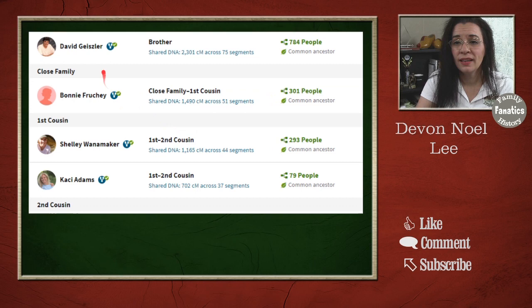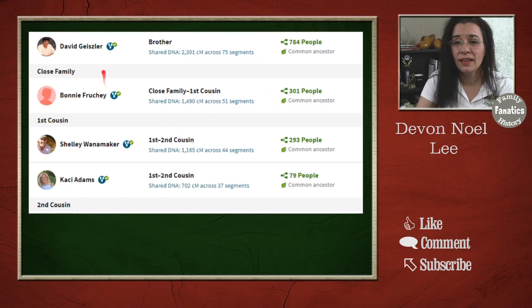What this new linking tool for your match list does is allow you to go and find your relatives and tell yourself, I know that this person on my DNA match list matches a specific person on my family tree that I have built on Ancestry.